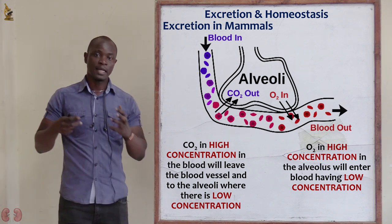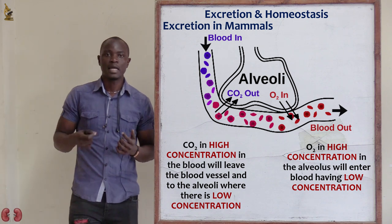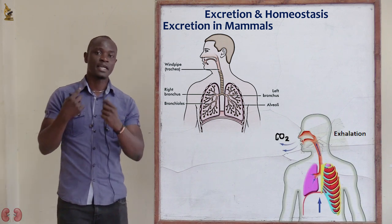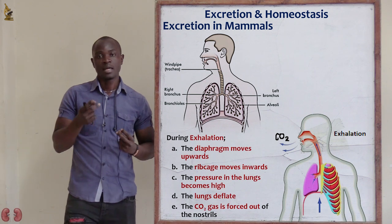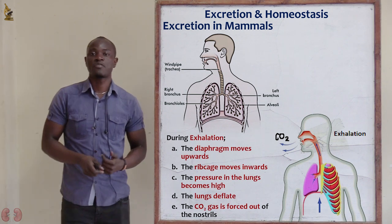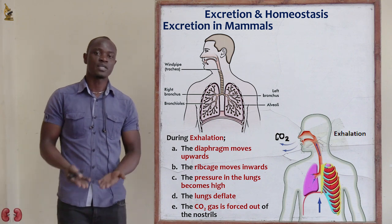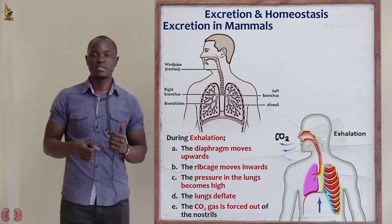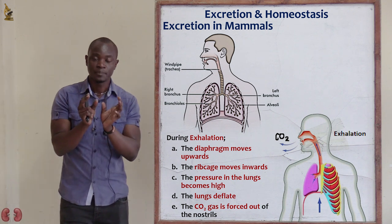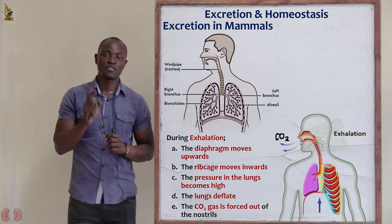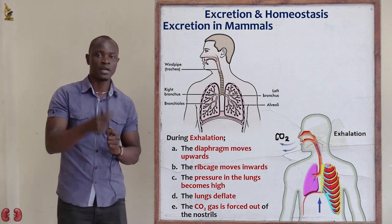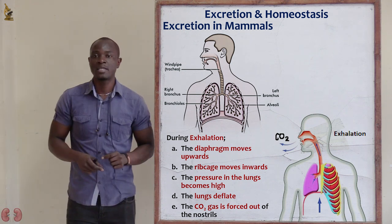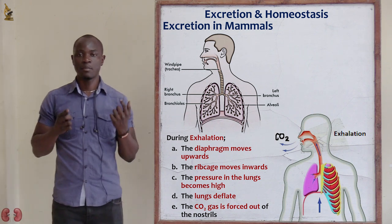This diagram shows the lungs with the bronchi and windpipe. Carbon dioxide is removed from the lungs through the process of exhalation. During exhalation, the diaphragm moves up, the rib cage also moves inward, causing the lungs to become smaller. As the lungs compress, air is forced out from the lungs — where pressure is high — and into the surrounding environment where pressure is low. That is the process of exhalation.